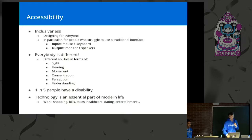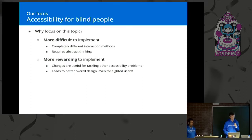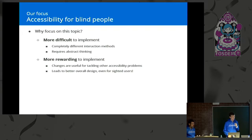We all know that technology is an essential part of modern life. Our focus is going to be on accessibility for blind people, and the reason is that it's one of the most difficult forms of accessibility to implement — because it's a completely new interface that's not based on visual interaction at all. But it's also more rewarding, in the sense that when you get accessibility right for blind people, you often find that it fixes other accessibility issues in the process, and it also leads to better overall design, even for sighted users.